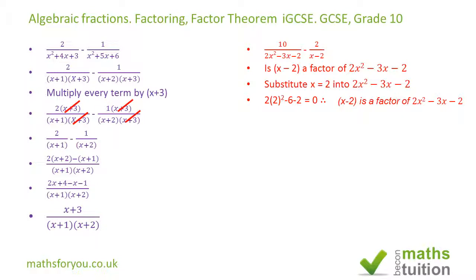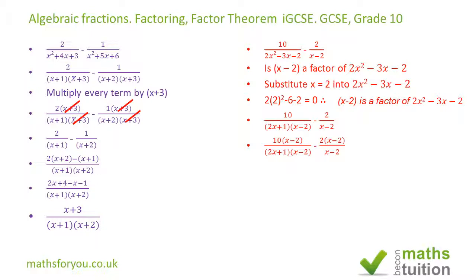We now go ahead and factorize the denominator, giving us 10 over (2x+1)(x-2) minus 2 divided by (x-2). Because (x-2) appears in both terms, if we multiply each term by (x-2) — similar to equivalent fractions — the (x-2)'s cancel out. We end up with 10 divided by (2x+1) minus 2 over 1.